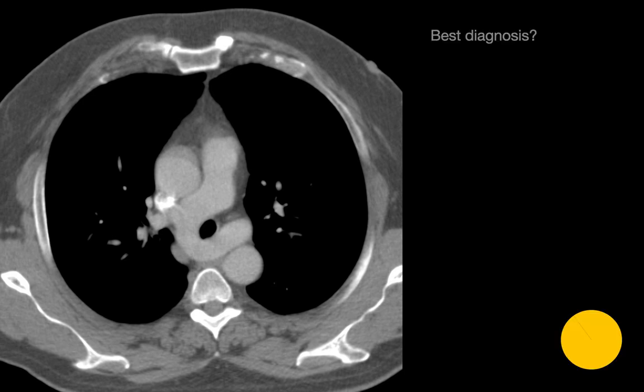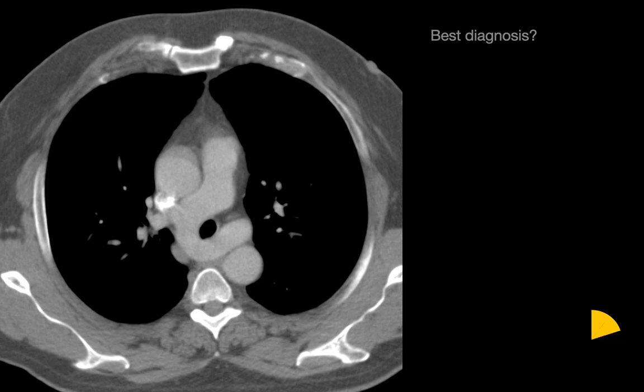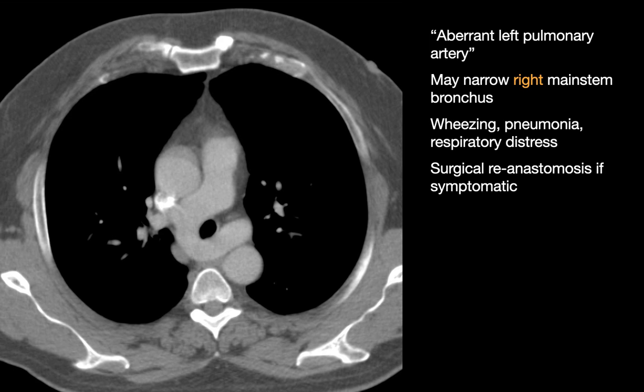What's your best diagnosis for the next case? This is an example of a pulmonary sling, also known as an aberrant left pulmonary artery. Pulmonary slings can sometimes narrow the right main stem bronchus, resulting in symptoms such as wheezing, pneumonia, or respiratory distress. In truly symptomatic patients, surgical reanastomosis may be considered.